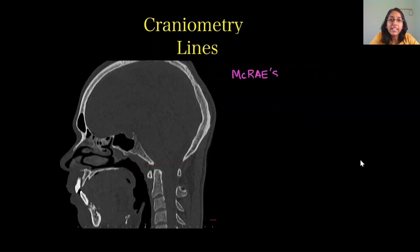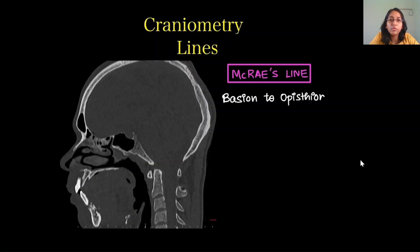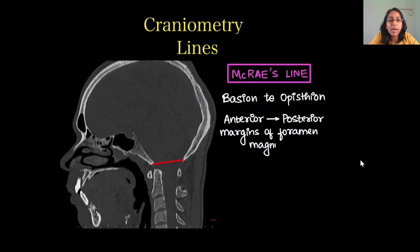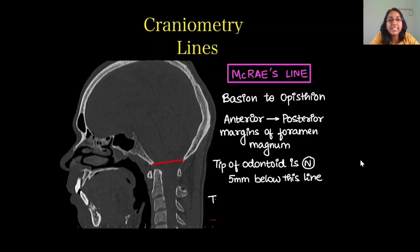Next we have McRae's line, which joins from the basion to the opisthion — these are the anterior and posterior margins of the foramen magnum. Normally, the tip of the odontoid is 5 mm below this line. If the tip crosses this line, it indicates basilar invagination.